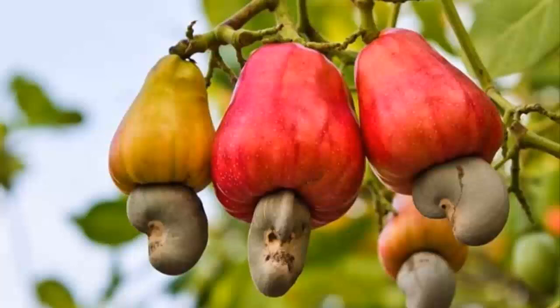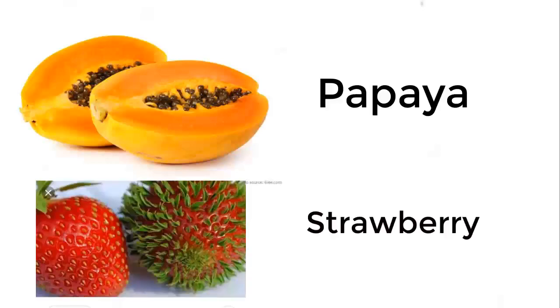Cashew nut seeds grow outside the fruit, whereas mango seed grows inside the fruit. Another example is papaya seeds and strawberry seeds. Papaya seeds, which you can see in the picture, are black in color. The seeds are covered with the fruit — seeds are inside the fruit. Whereas in the strawberry, the seeds are outside.